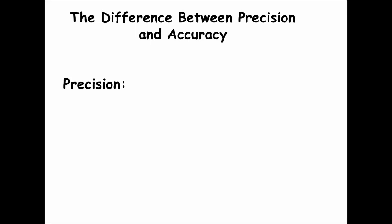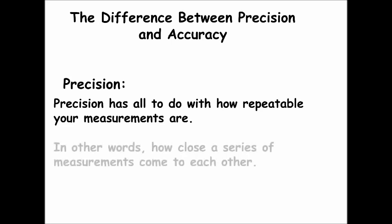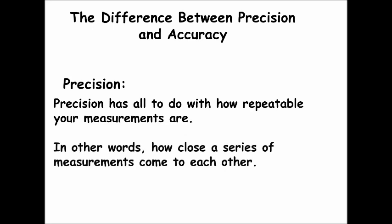Precision, by definition, has all to do with how repeatable your measurements are. In other words, precision has to do with how close a series of measurements come to each other. So if you and five other students were to measure the length of a piece of string and you all came up with exactly the same measurement to the hundredth place, you would know that you were precise because all your measurements were very close to each other.